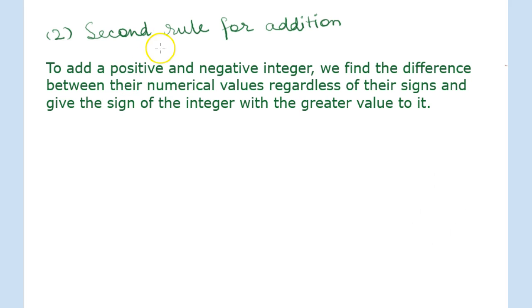According to the second rule of addition, to add a positive and negative integer, we find the difference between their numerical values regardless of their signs and give the sign of the integer with the greater value to it.